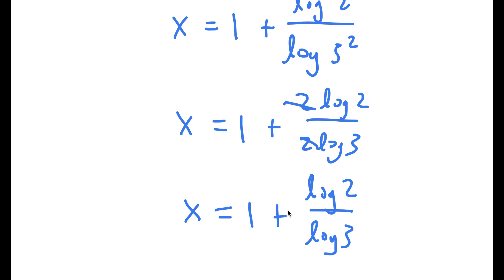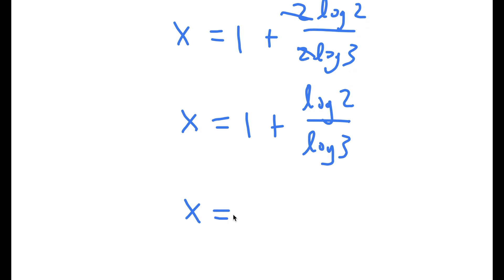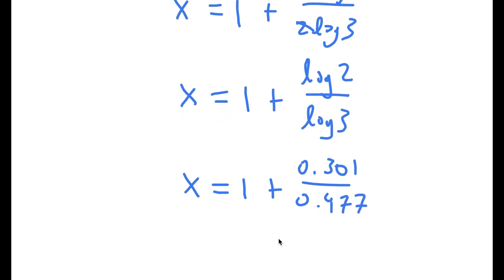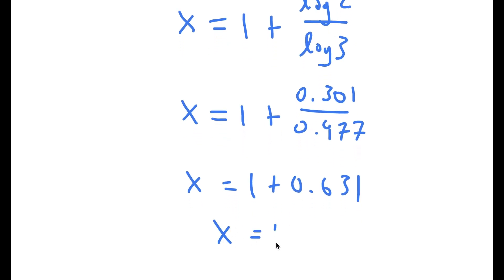Log 2 over log 3 equals 0.301 over 0.477, which equals 0.631. So x is equal to 1.631.